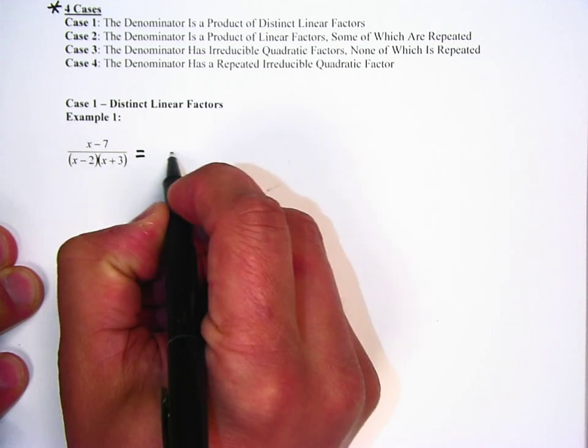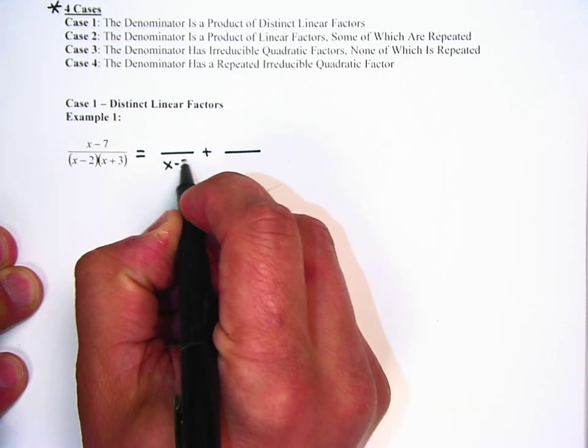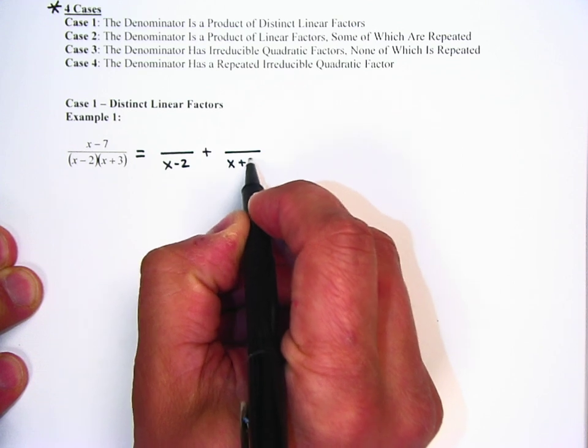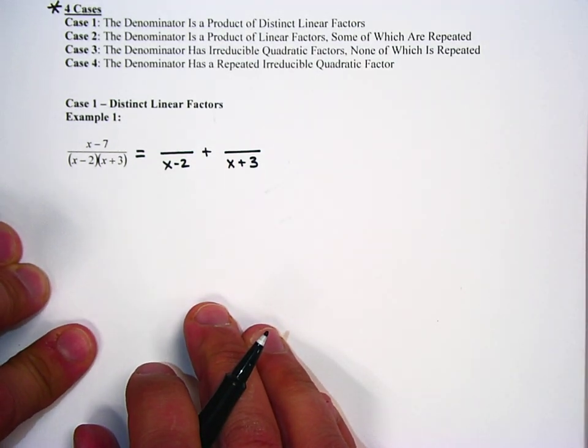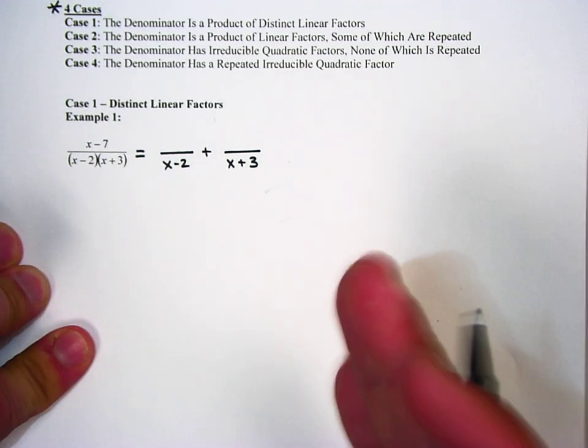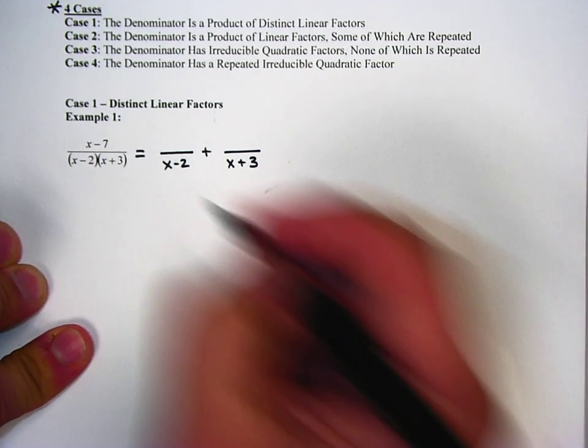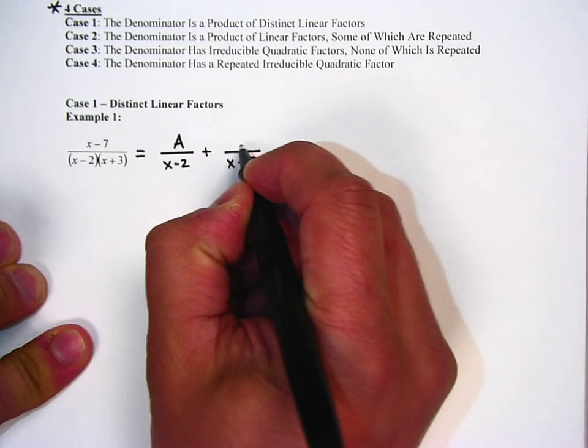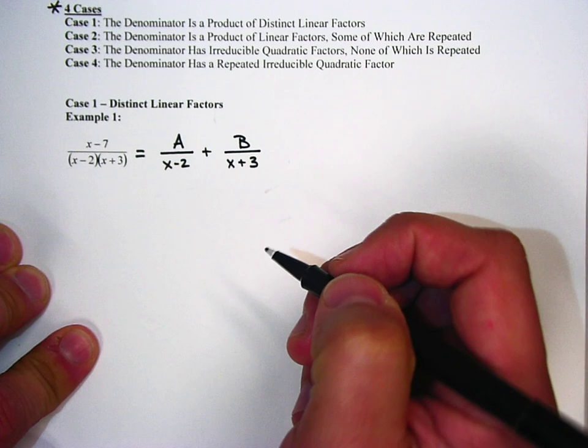Second step is to break it up into two distinct fractions. This one here has x minus 2 on the denominator. The other one has x plus 3 on the denominator. If there were three or more linear factors in the bottom, we would put those over there as well. For each term, we put a capital A or B on the top.